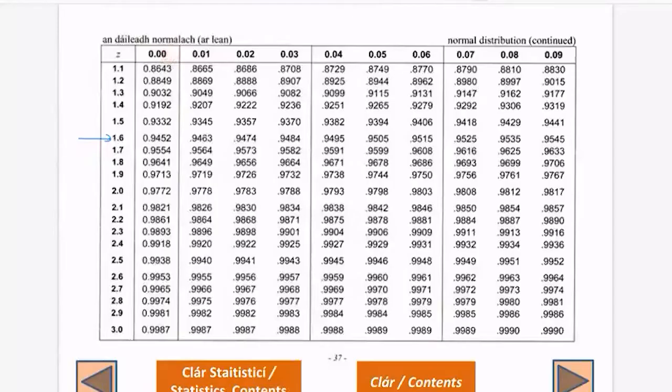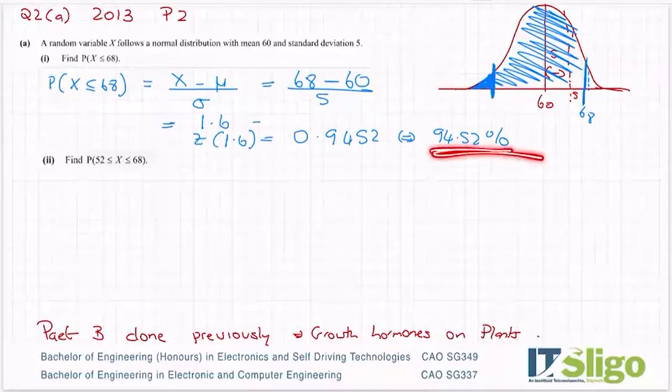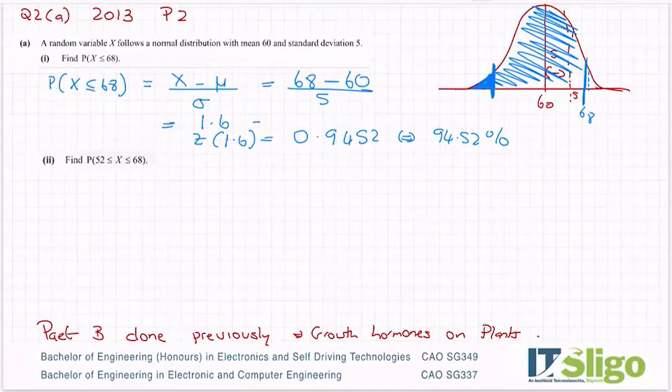0.9452. So 94.52%, which is kind of what I expected. It was nearly up at two standard deviations. The difference there and the two and a half percent here kind of cancels each other out. So 0.9452 or 94.52%. So that's that first one.